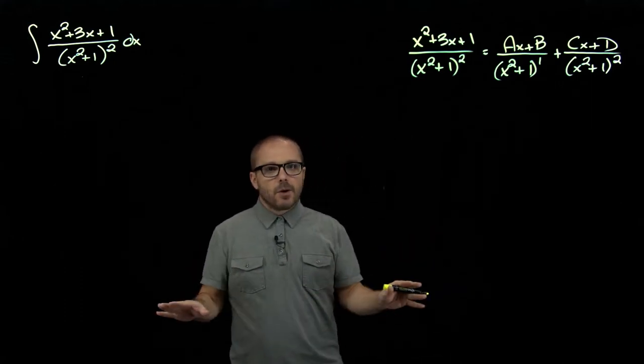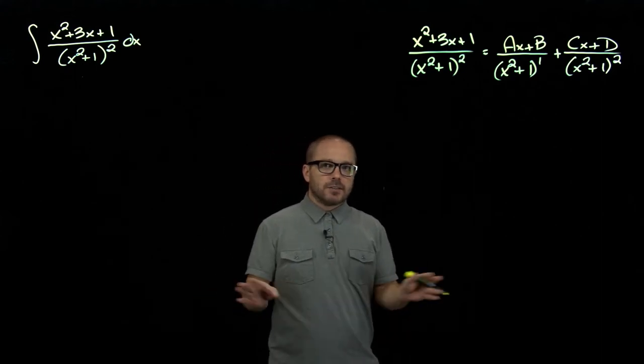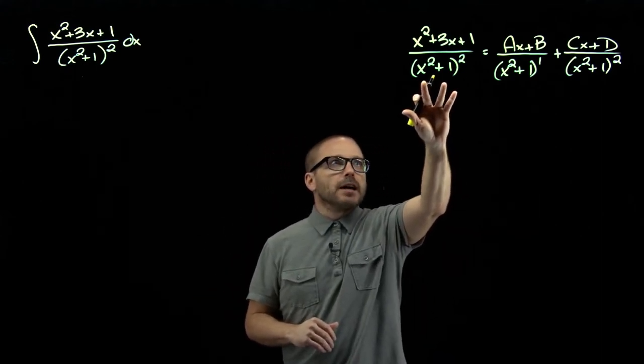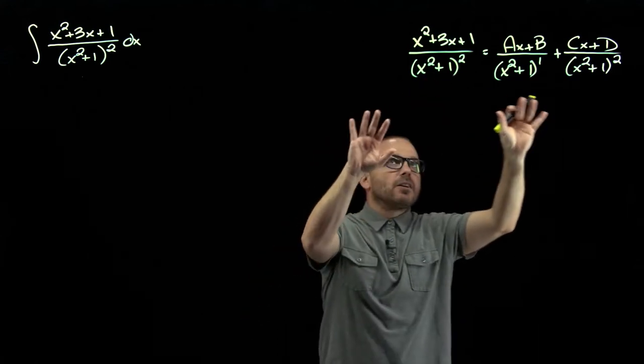Once we have that though, everything's always the same after this. Clear your fractions, solve for your coefficients. So multiply both sides by this denominator to clear out all our fractions.